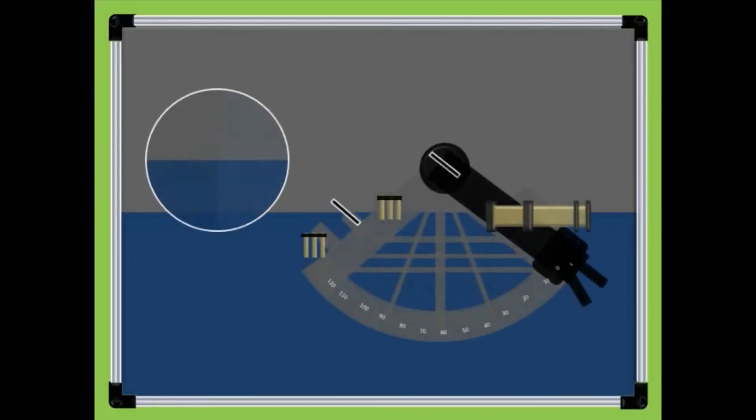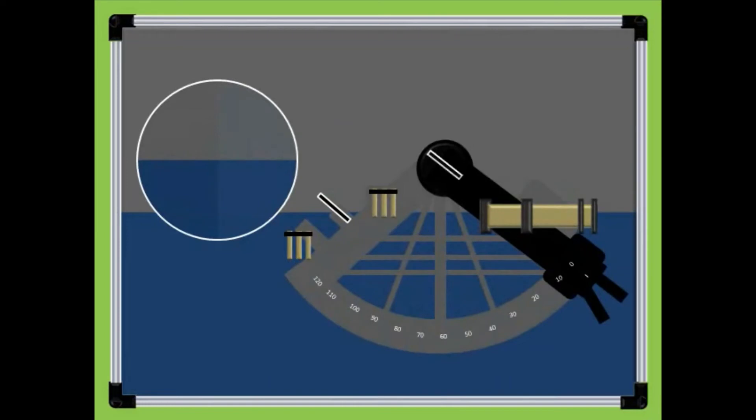Set the index arm into zero degree position. When the true horizon and the reflected horizon come into line, we have nil error. Proceed with the sextant sight.